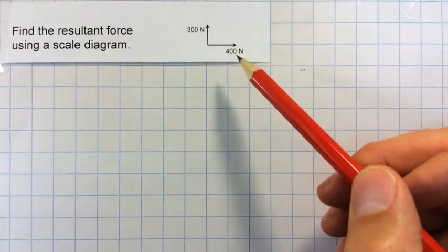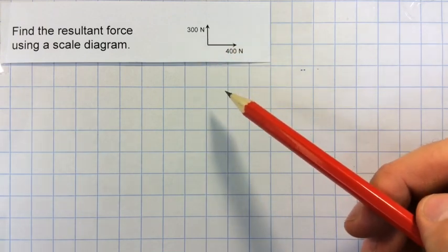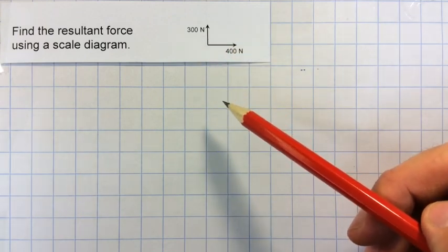So in this, we can see that we've got one force of 400 newtons, one of 300 newtons. And the first thing that you need to do is decide on a sensible scale.